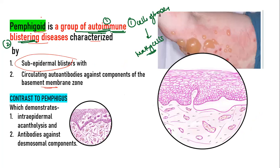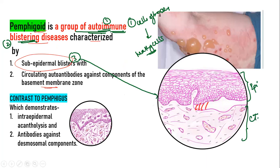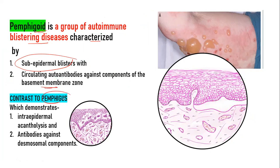It is a group of autoimmune blistering diseases characterized by subepidermal blisters — the blister occurs below the epithelium, in the subepithelial zone. It is caused by circulating antibodies against the basement membrane. Recall that in pemphigus, there are intraepithelial vesicles and antibodies against the intercellular substance or desmosomes. In contrast, pemphigoid features subepidermal blisters and antibodies against the basement membrane zone.